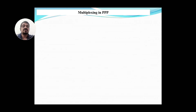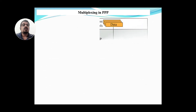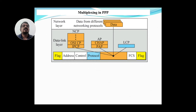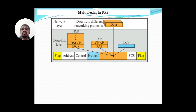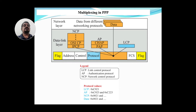These protocols are placed in the data link layer. Data comes from different networking protocols in the network layer down to the data link layer, which has the standard PPP frame format: flag, address, control, and protocol fields. All the sub-protocols — LCP, authentication protocol, and network control protocol — have their data loaded into the payload field of the PPP frame.